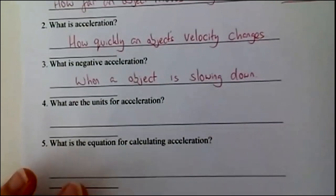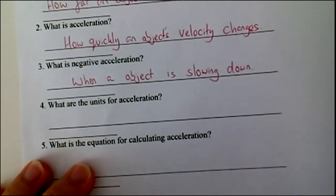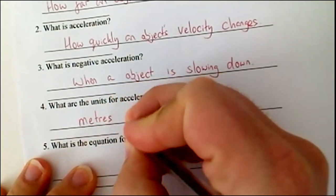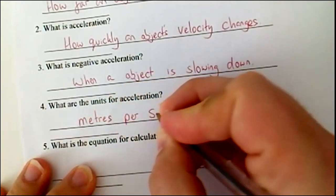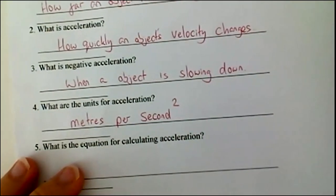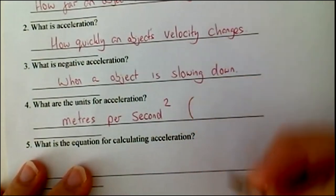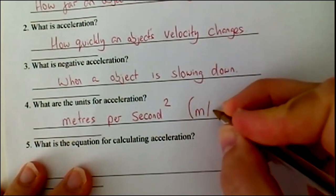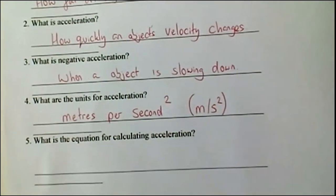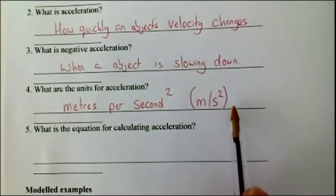So, the units for acceleration, they're a little bit different, but again, they're also similar at the same time, they are metres per second squared. Now, when you come to write this today, when you use a unit, we're going to do m slash s squared. So, whenever you write acceleration, you always use this unit here, metres per second squared.